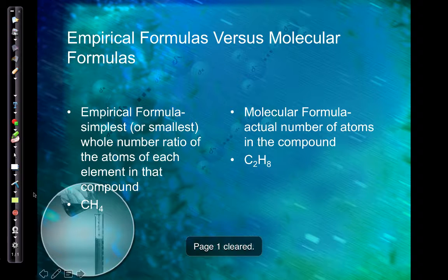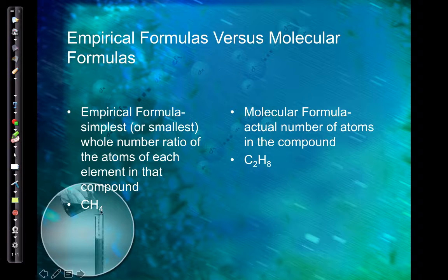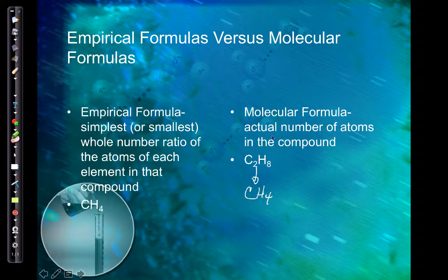An empirical formula is the smallest whole number ratio of atoms of each element in a compound — it should not be reducible any further. Methane has a 1:4 ratio, which can't be reduced. C₂H₈ can be reduced — it's also a 1:4 ratio, so it is not an empirical formula. A molecular formula is the actual number of atoms in the compound. The molecular and empirical formulas can be the same, but if it can be reduced, it cannot be an empirical formula.